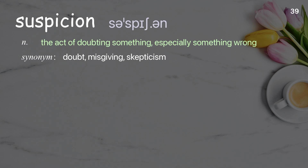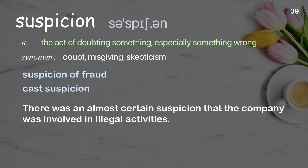Suspicion — the act of doubting something, especially something wrong. Examples: there was an almost certain suspicion that the company was involved in illegal activities.